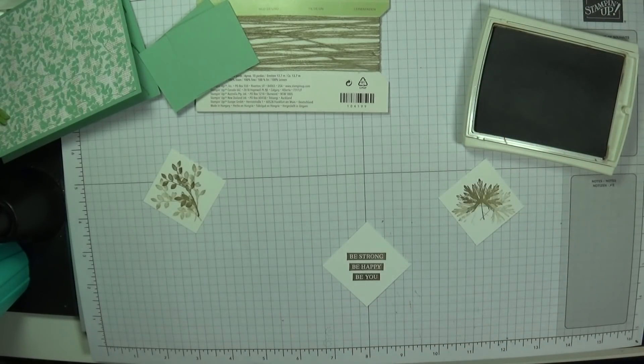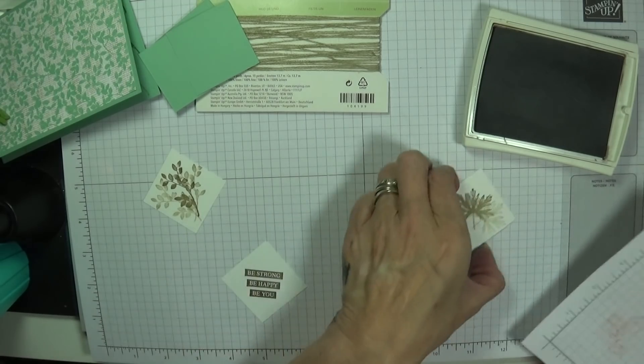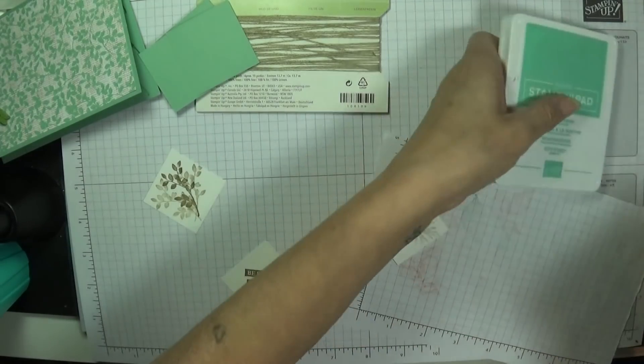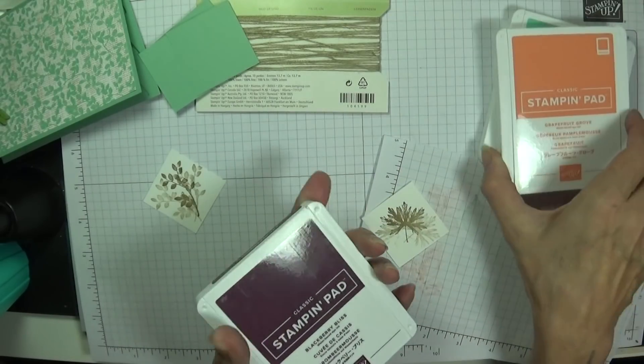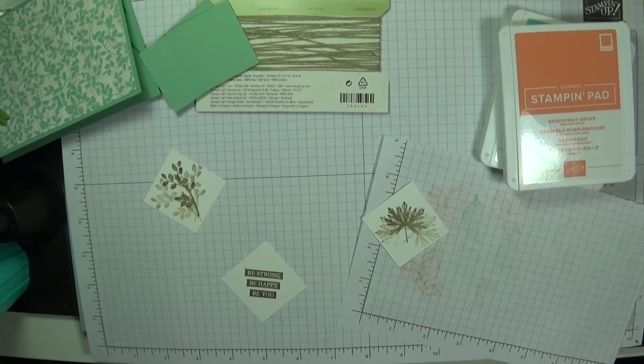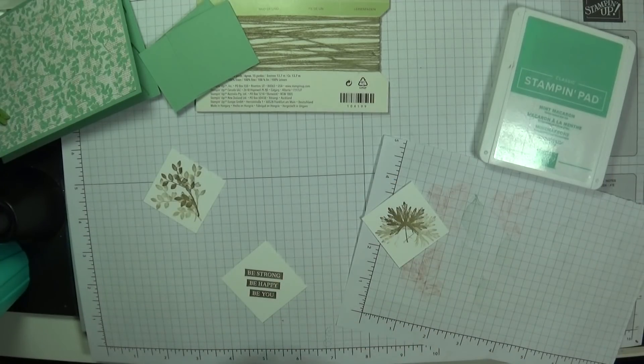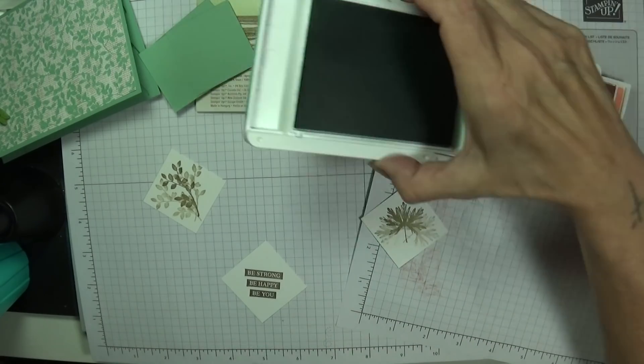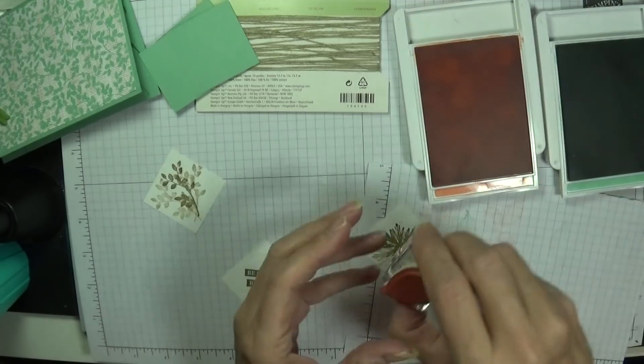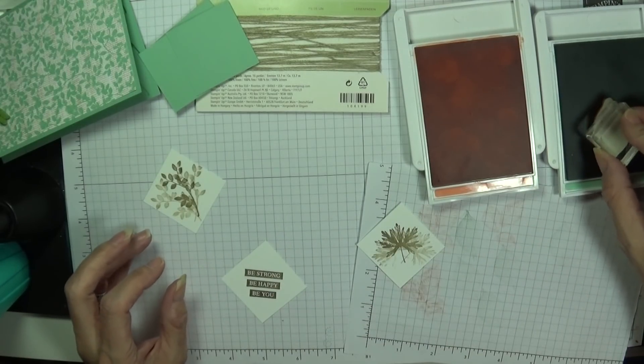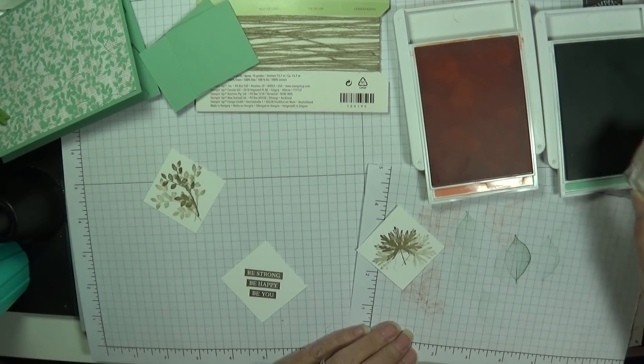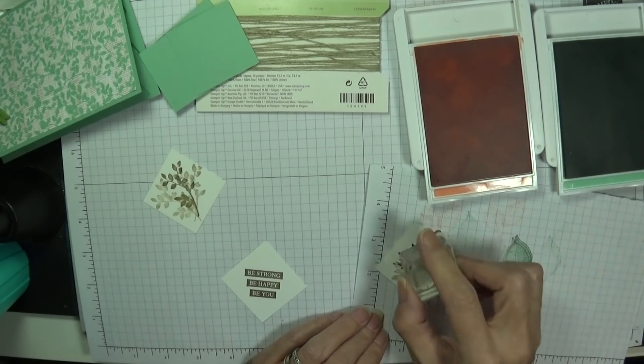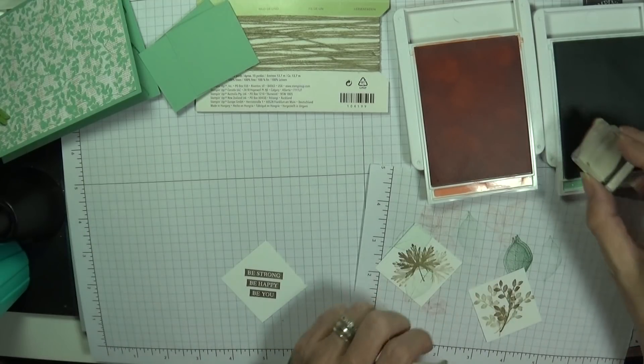What I'm going to do now is grab a scrap of paper which I have here. And I'm going to take my mint macaron and my grapefruit grove. And we're going to stamp off before we stamp over. So I've got my two colors. Let's go. I've got the little leaf which I had in the green and I'm just going to stamp off. Yes, I'll stamp off once.